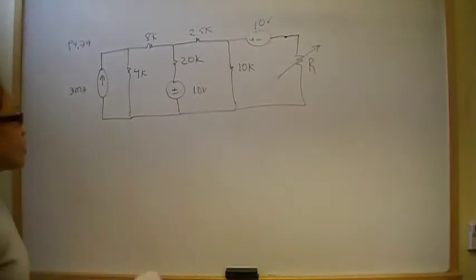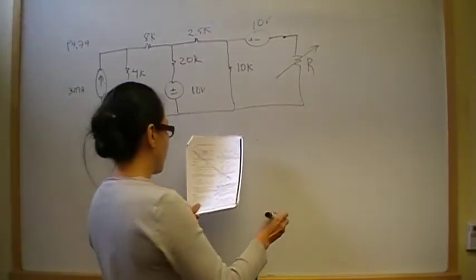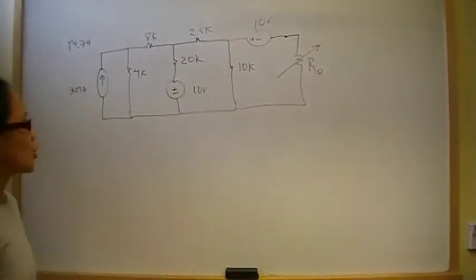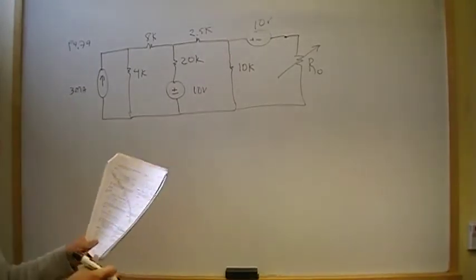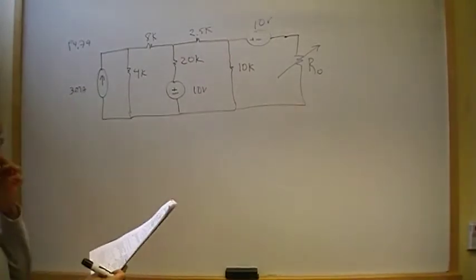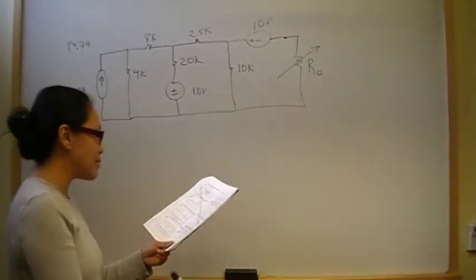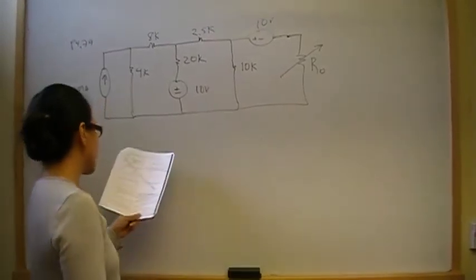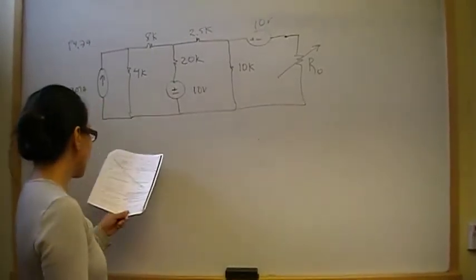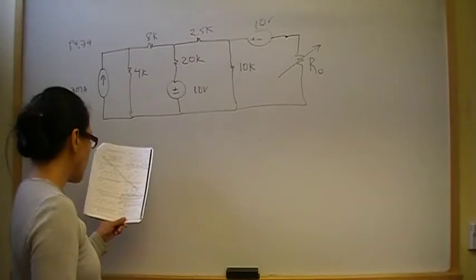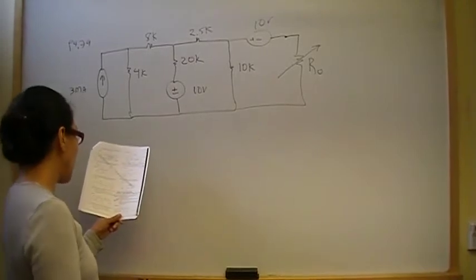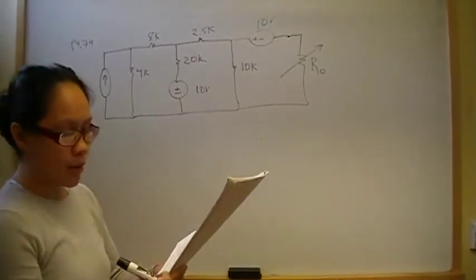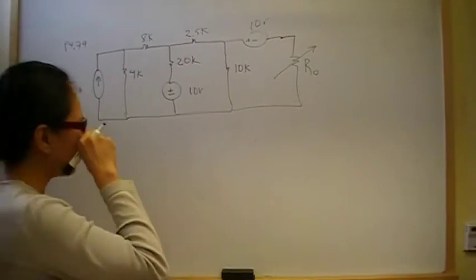In part A, find the value of this varistor that will give us maximum power transfer. In part B, find the maximum power that can be delivered to R-naught. In part C, find the resistor closest to what we found in part A and determine how much power is delivered to that resistor.